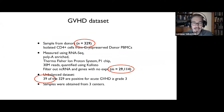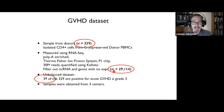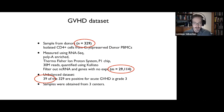Let's talk about the dataset we built for this. Together with collaborators, we had access to 329 samples of donors for which we extracted CD4 cells. Gene expression was measured with RNA-seq, and we ended up with 29,000 covariates per sample. Even worse, we only have 39 positives out of the 329 cohort, which creates even more complication when you try to make a prediction.